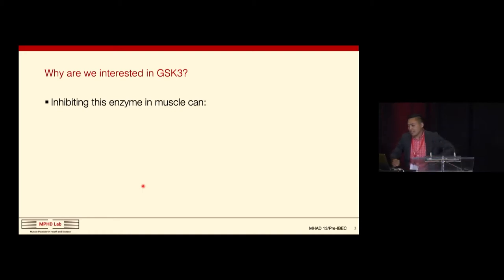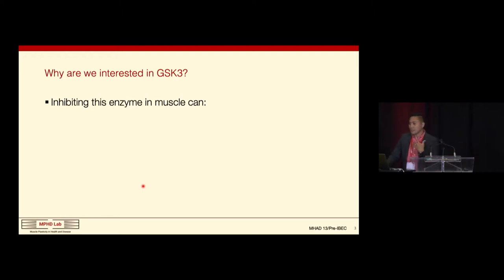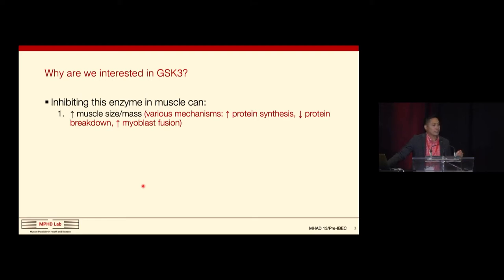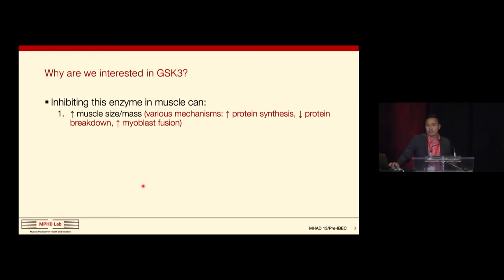Why are we interested in inhibiting GSK-3 in muscle? When you stop GSK-3, you can increase muscle size and muscle mass through a variety of mechanisms: an increase in protein synthesis, a decrease in protein breakdown affecting net protein balance, and an increase in myoblast fusion, which has implications for muscle development and regeneration. We've shown this recently in my lab.